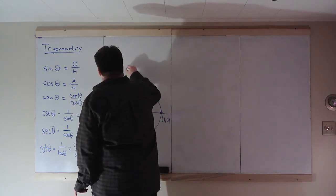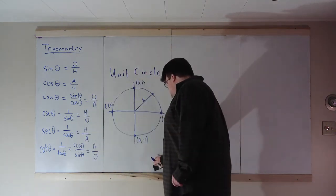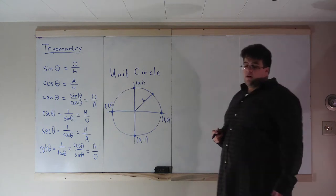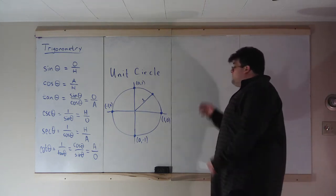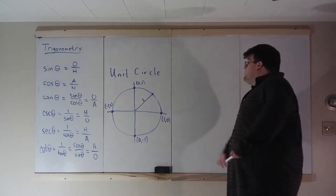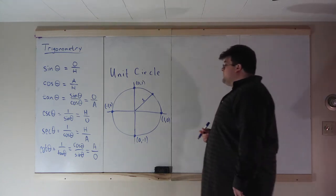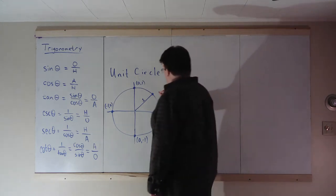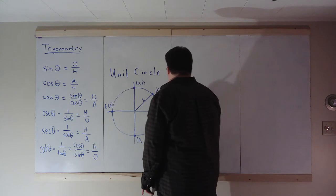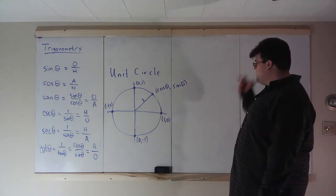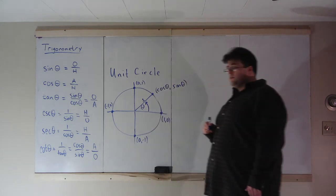We will also consider the unit circle — another way of defining the trig functions. I'll use it to illustrate a few things and also for evaluation purposes. The unit circle is a circle of radius 1 centered at the origin. The coordinates of a point on the unit circle are given by cosine of theta and sine of theta, where theta is the angle measured from the positive x-axis going counterclockwise.